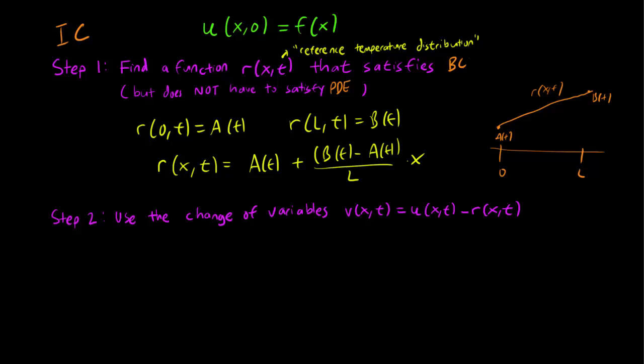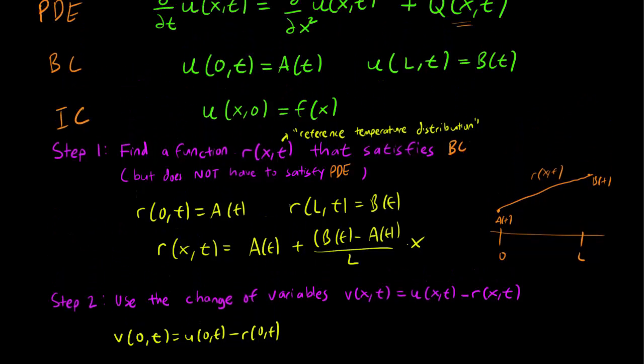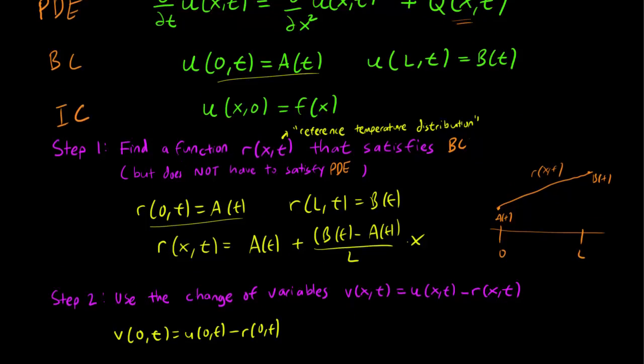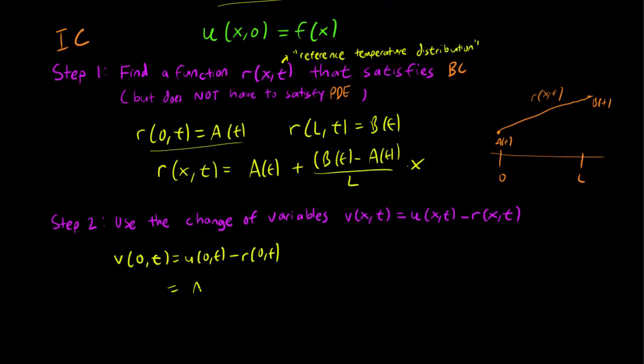And we can see how it affects the boundary values. So let's consider the boundary values of v. So v(0,t) is going to be equal to u(0,t) minus r(0,t). We know that the boundary value of u(0,t) is A(t), and we know that the boundary value of r(0,t) is also A(t). So this gets us A(t) minus A(t), and therefore v(0,t) is equal to 0.